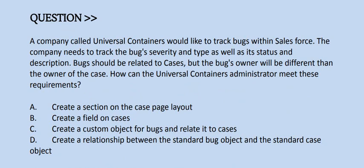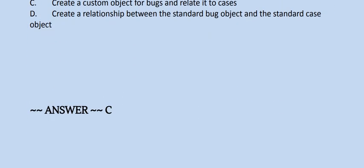Option A: Create a section on the Case Page Layout. Option B: Create a field on Cases. Option C: Create a custom object for bugs and relate it to cases. And Option D: Create a relationship between the standard bug object and the standard case object. The correct answer is Option C.